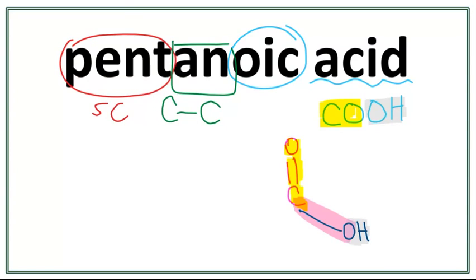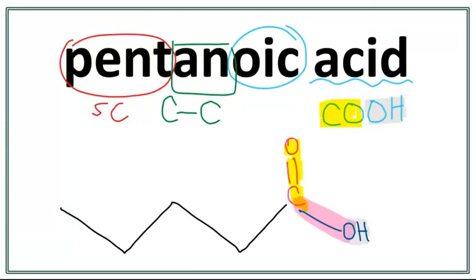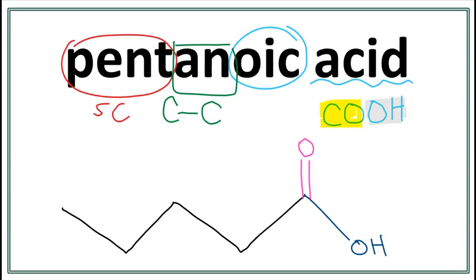Let's draw the parent chain. A trick to draw this is that you always count to one less than the number of carbons you want to draw: one, two, three, four. Now we're simply going to connect our COOH with the parent chain. The carbon in the COOH is always the first carbon, second carbon, third carbon, fourth carbon, and the fifth carbon. So this is the structure for pentanoic acid.